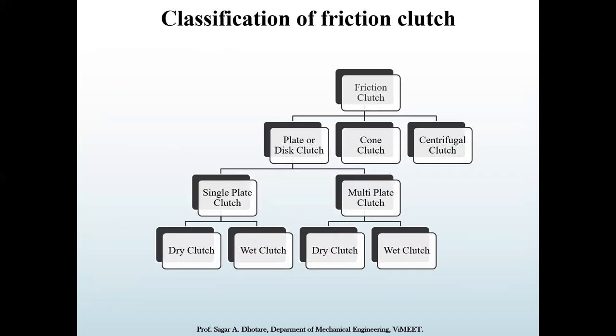In the classification of friction clutches, they are basically divided into three categories: plate clutch or disc clutch, cone clutch, and centrifugal clutch. Plate clutches are further classified as single plate or multi-plate, and both can be further classified as dry clutch or wet clutch.